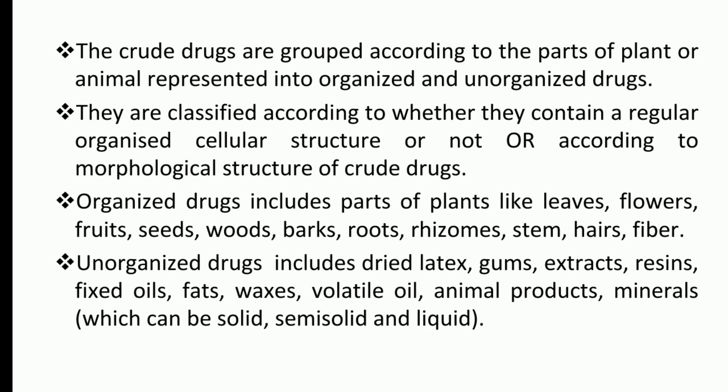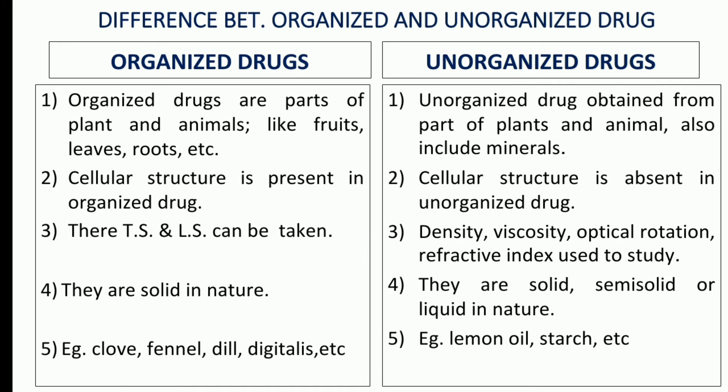Now we will see the difference between organized and unorganized drugs. Organized drugs are the parts of plants and animals like fruits and leaves. Unorganized drugs are obtained from the parts of plants and animals and also include minerals. Cellular structure is present in organized drugs and absent in unorganized drugs. Transverse sections (TS) and longitudinal sections (LS) can be taken for the study of organized drugs, while density and viscosity are used to study unorganized drugs.